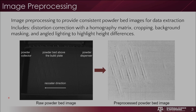The first step is to do some image pre-processing. The image on the left is just the raw powder bed image — it's very dark and has a bunch of extra information that isn't needed. The authors did some distortion correction with the homography matrix, cropping, background masking, and angled lighting to highlight the height differences, which help improve the overall anomaly detection process.